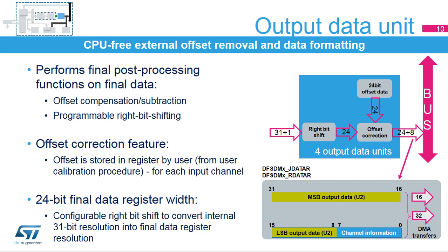The maximum resolution of the final output data register is 24 bits, but the internal resolution can go up to 31 bits. Certain applications have their own constraints, for example 8, 12, 16, or 24-bit data resolution. Therefore, there is an option to perform a right bit shift of the data to provide the final result with the required width without overflowing the 24-bit final data register. Right bit shift is configurable from 0 to 31 bits, and the final resolution depends on the digital filter and integrator settings as well as the right bit shift option.